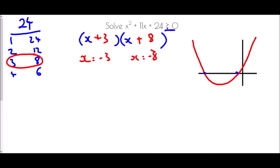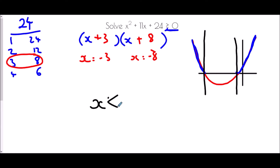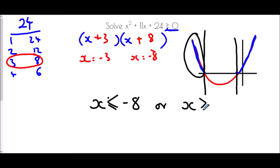We are looking for values where the expression is greater than 0, which means we are looking at the sections above the x-axis. Because we are looking at points above the x-axis, we have two separate solutions: x is less than or equal to negative 8, and x is greater than or equal to negative 3.